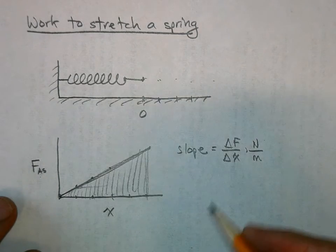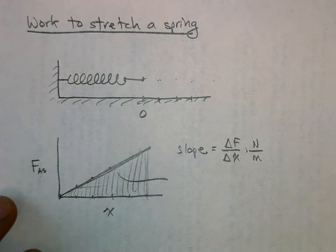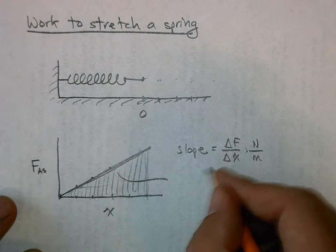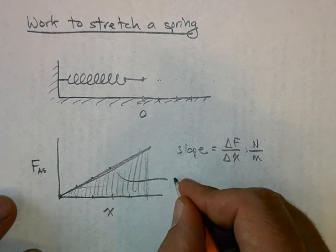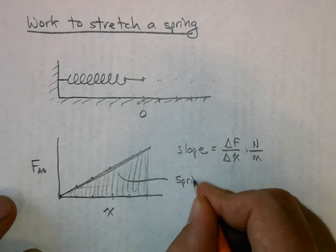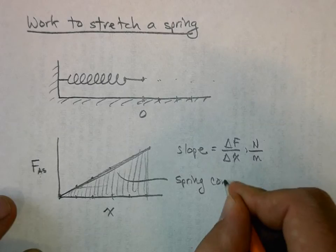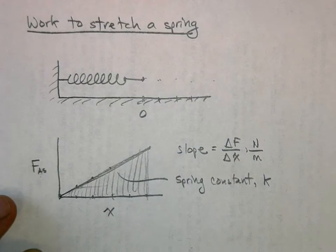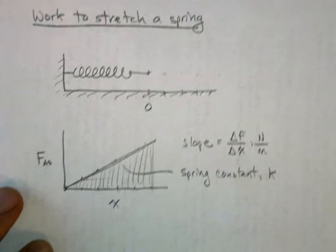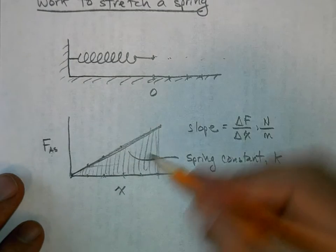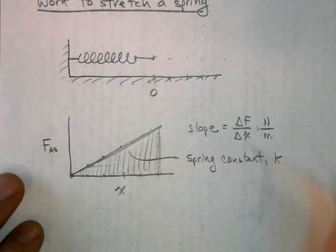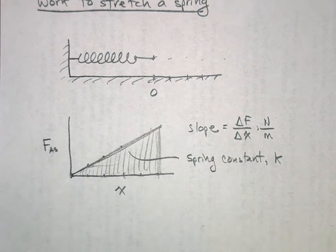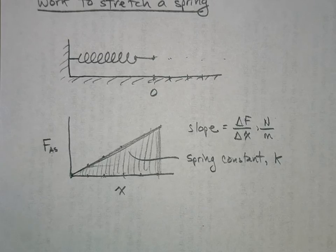Now this has a name - this measure of stiffness of a spring, the slope of this, is called the spring constant. We give it a variable name of k, and it has units of newtons per meter. Now let's talk about the area underneath this graph and how the area represents the work done to the spring.